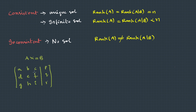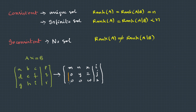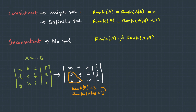We apply row transformations, and after multiple steps, if the augmented matrix reaches a form where the lower triangle of the coefficient matrix becomes zero, the rank of the coefficient matrix is three. The rank of the augmented matrix is also three. Because these two are equal, we can directly conclude it has a unique solution — it is consistent.